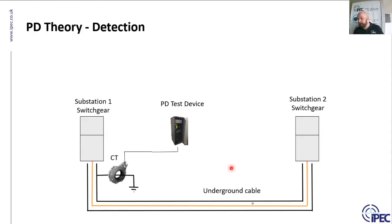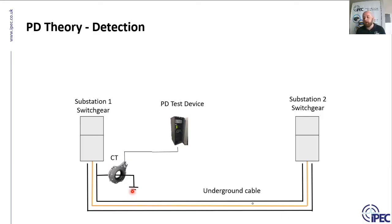The signal travels along the inside of the cable earth, comes out of the switchgear, and through the HFCT. When detecting PD on the earth sheath, the earth must be isolated from the switchgear — if not, the PD signal will enter the switchgear and be lost. At lower medium voltage levels such as 11 kV or 10 kV, this isolation may not always be in place due to installation errors or policy.